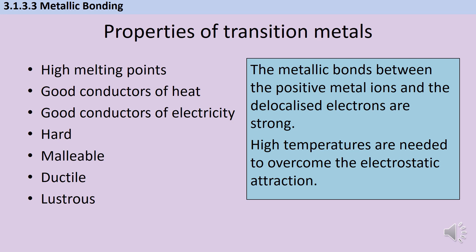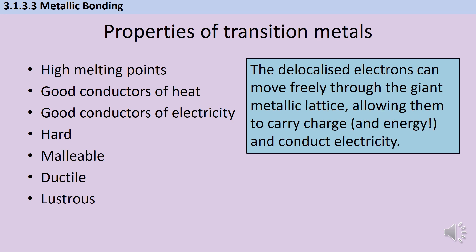As we've just explained, the metallic bonds between the positive metal ions and the delocalised electrons are very strong, and that means that high temperatures are needed to overcome the electrostatic attraction. And that explains why they have high melting points. The delocalised electrons are able to move freely through — not throughout — the giant metallic lattice. And that allows them to carry charge and energy, and therefore conduct electricity and heat.